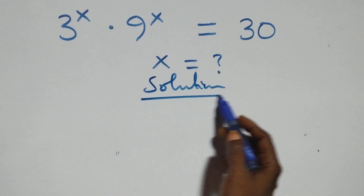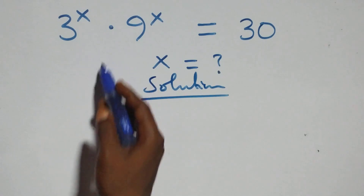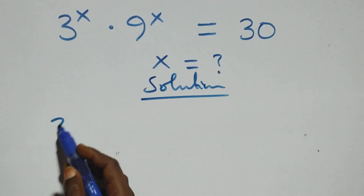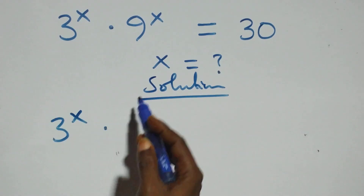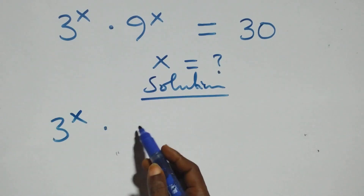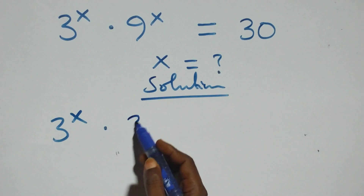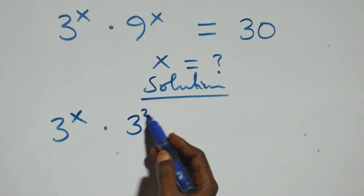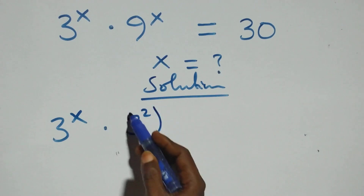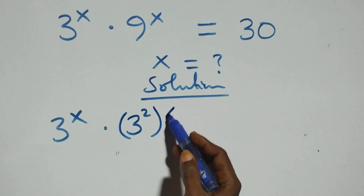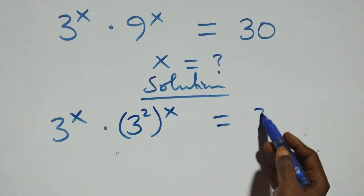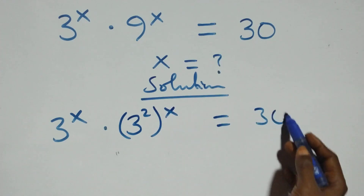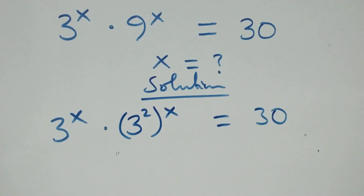From what we have here, we can write this as 3 raised to power x times 9, and 9 can be written as 3 squared, all raised to power x, equals 30 on this side.